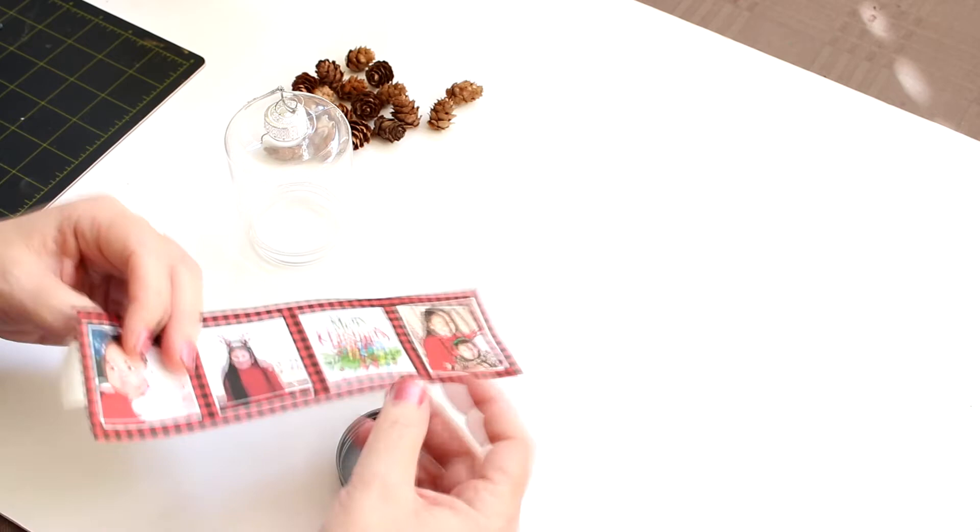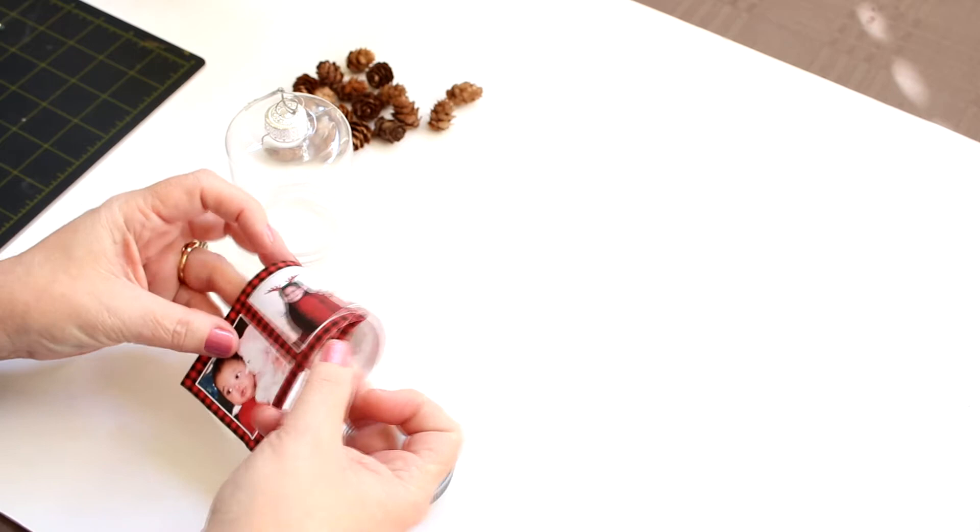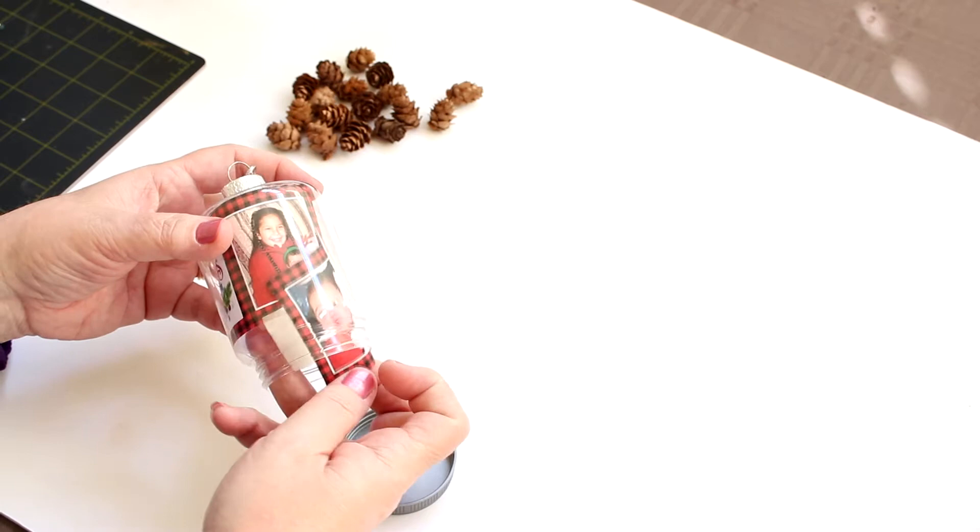Just bend it back a little bit. Then I'm going to roll my photo or my template up and it just needs to be small enough so that it can fit inside the jar.